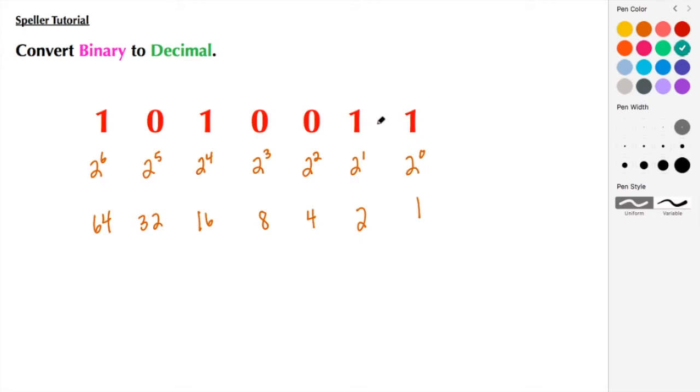We're going to exclude these two digits because they have zeros. We care about the 16. We're going to exclude the 32 because of the 0 here, and we care about the 64.